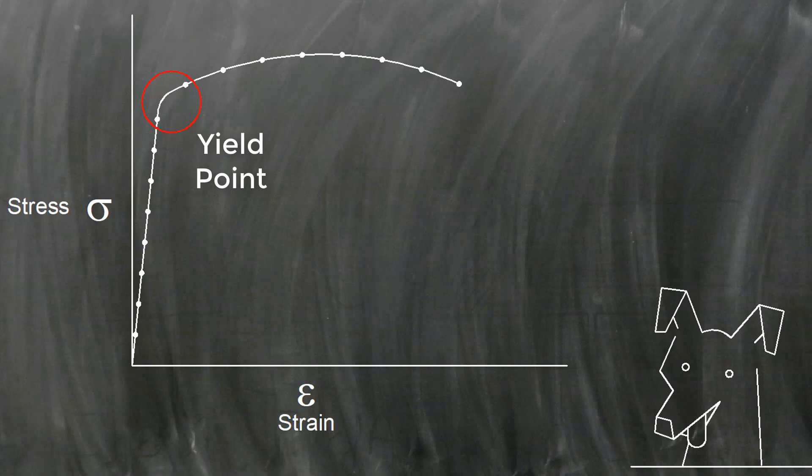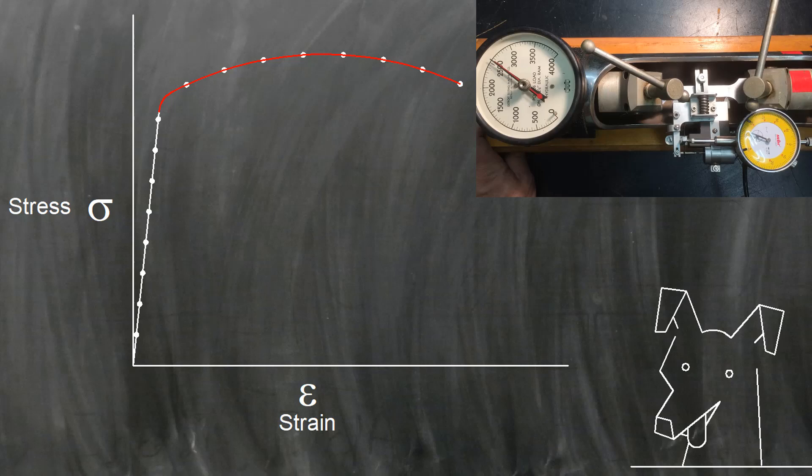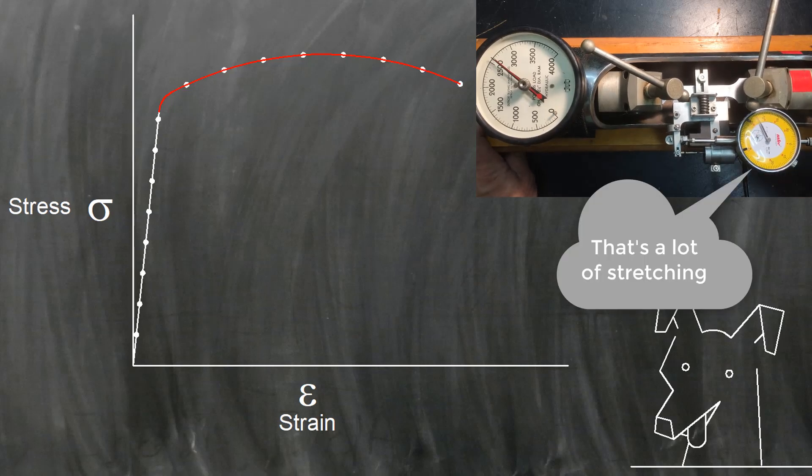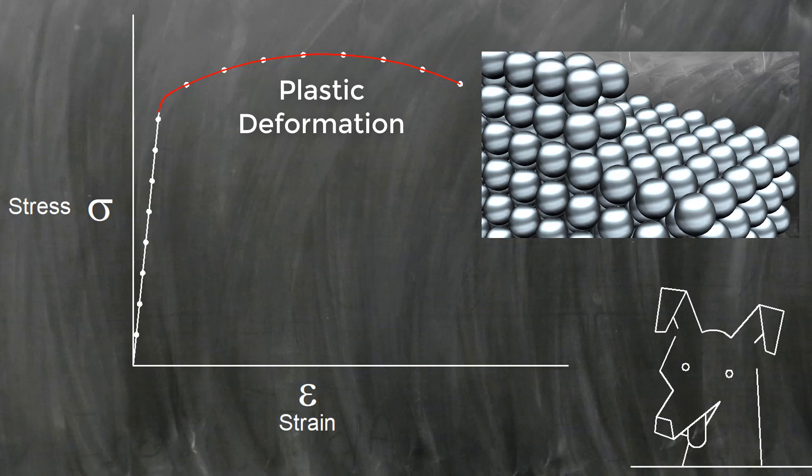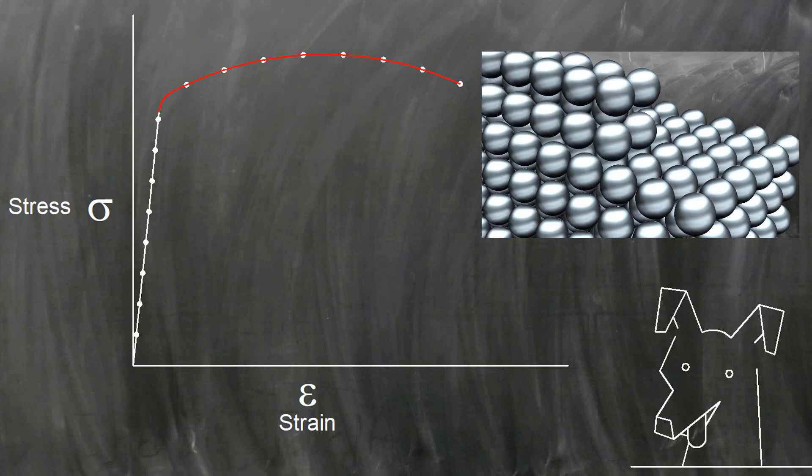Beyond the yield point the metal stretches without generating much more stress. It begins to elongate and is permanently deformed. The type of deformation happening here you may remember is called plastic deformation. During plastic deformation the rows of atoms slide past each other and will never go back to the way they were before.